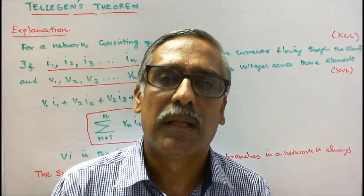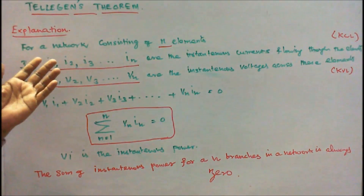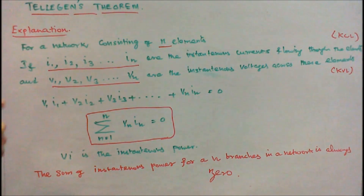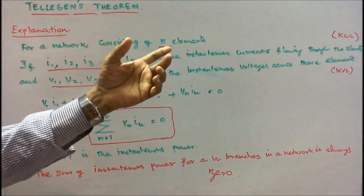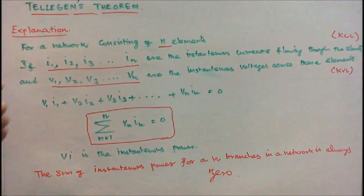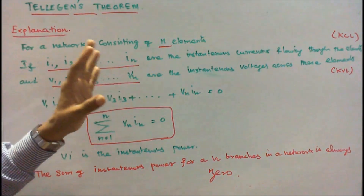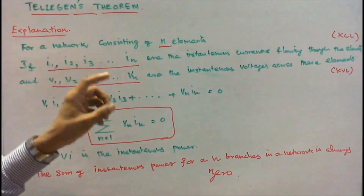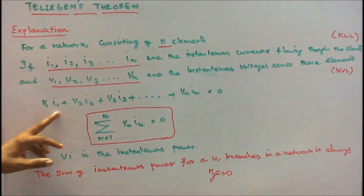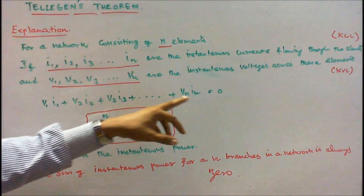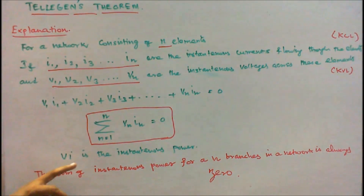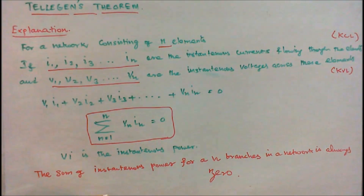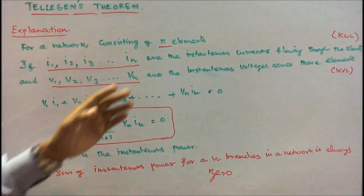Now we'll see the explanation of Tilligan's theorem. For a network consisting of N elements, if I1, I2, I3 up to In are the instantaneous currents flowing through the elements satisfying Kirchha's current law, and V1, V2, V3, Vn are the instantaneous voltages across these elements satisfying Kirchha's voltage law, then V1·I1 + V2·I2 + ... + Vn·In = 0. Or, the summation from n=1 to n of Vn·In is equal to zero. Here Vn·In is the instantaneous power. Tilligan's theorem states the sum of the instantaneous power for n branches in a circuit is always zero.